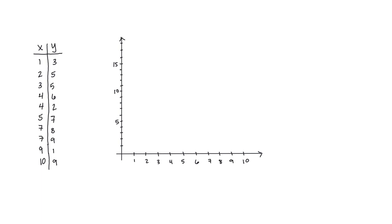Let's try creating a scatter plot ourselves. Here we have a set of paired data x and y and we're going to plot each of these x and y values as an ordered pair on the graph here given.